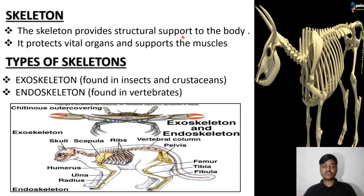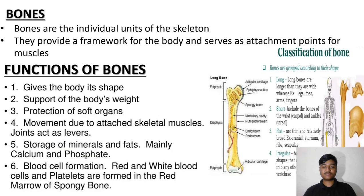The skeleton provides structural support to the body, protects vital organs, and supports the muscles. Types of skeletons: exoskeleton and endoskeleton. Exoskeletons are found in insects and crustaceans. Endoskeleton is found in vertebrates. You can observe the images of both exoskeleton and endoskeleton.